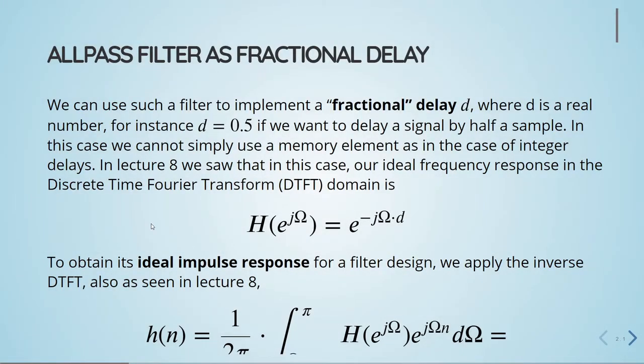We can use such an allpass filter to implement, for example, a fractional delay d, where d is a real number, for example 0.5, which we want to delay a signal by half a sample. So in this case, we cannot simply use a memory element as in the case of integer delays.